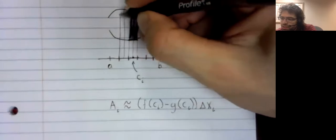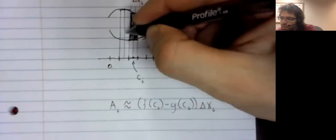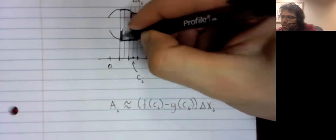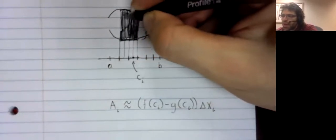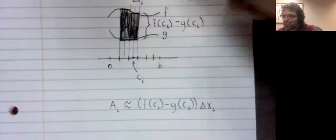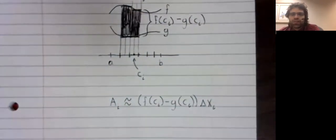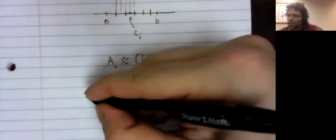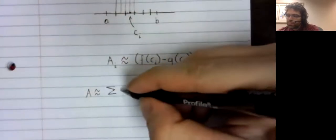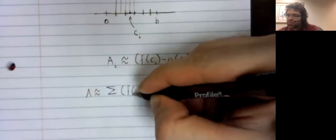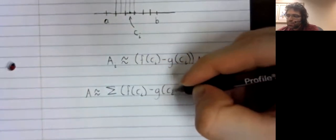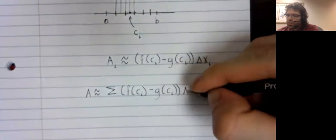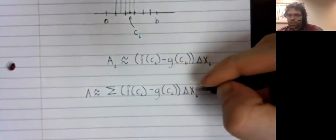And this is what we want to look at. Repeat this process on each of these little intervals, add all of those approximations up and you'll have approximated the area between the curves. It's approximately the sum of these approximations.